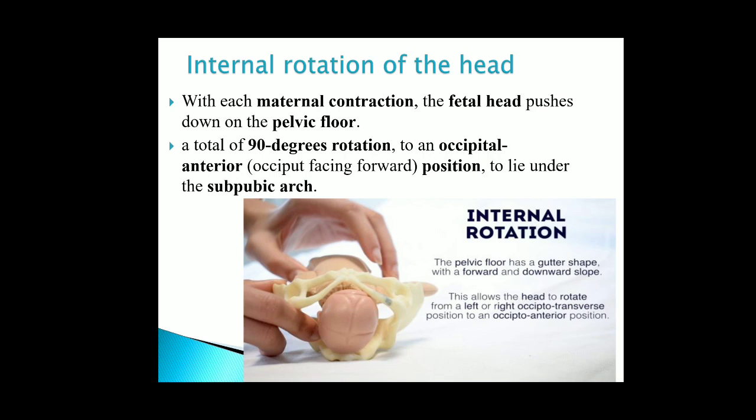Internal rotation of the head: with uterine contractions, the fetal head pushes down on the pelvic floor, achieving a total of 90 degrees rotation to the occipito-anterior position to lie under the sub-pubic arc.